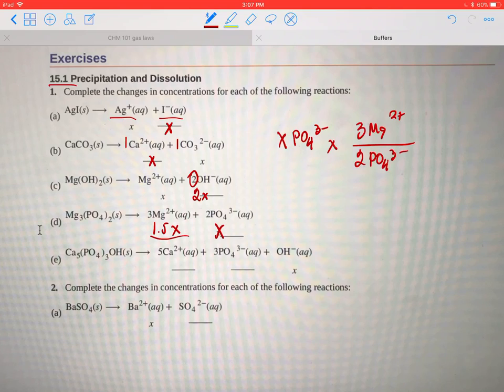For E, we have this complicated guy here. We have calcium phosphate hydroxide, which dissolves to form calcium ion, phosphate ion, hydroxide ion.